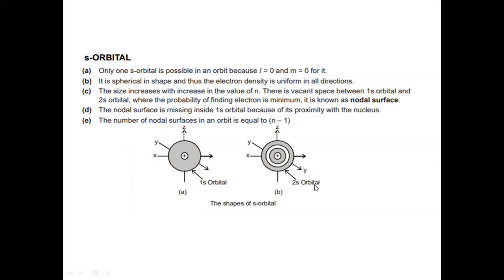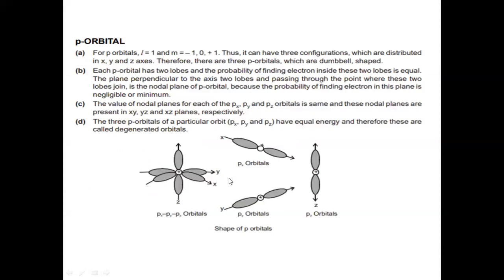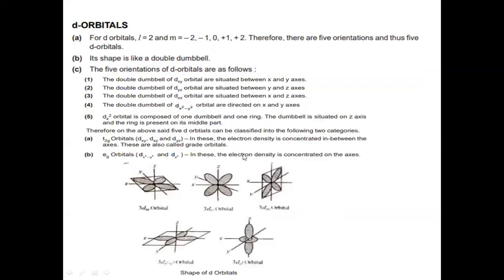There are different orbitals present in an atom: s, p, d, and f. The s orbital has a spherical shape. There are three p orbitals in the p sub-shell: px, py, pz, each with a dumbbell shape oriented along the respective axis. The d sub-shell consists of 5 d orbitals: dxy, dyz, dzx, dx²-y², and dz² — having a double-dumbbell shape. F orbitals have a complex shape with seven different orientations.